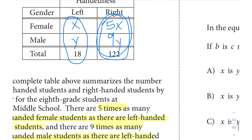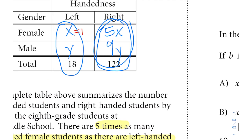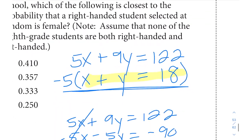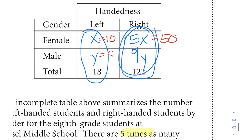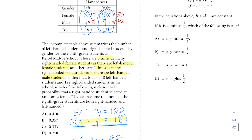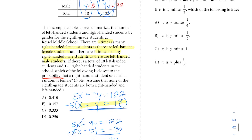Now we have y and we have x. If x is 10, that means this would be 10 left-handed females and 50 right-handed females. If y is 8, that means this would be 8 left-handed males and 72 right-handed males.